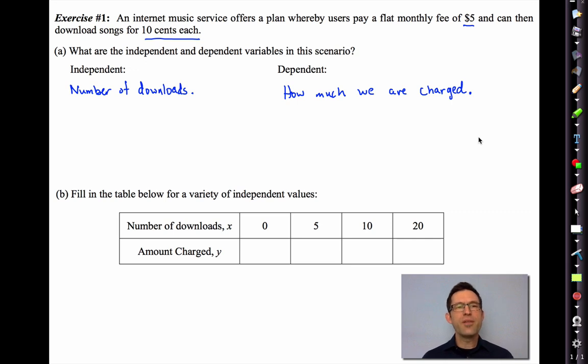Letter B. Fill in the table below for a variety of independent values. In other words, how much are we going to have to pay if we don't download anything? How much are we going to have to pay if we download 5 songs or 10 songs or 20 songs? Now, you should be able to do this with the information that the problem gave you. So why don't you go ahead and do that?